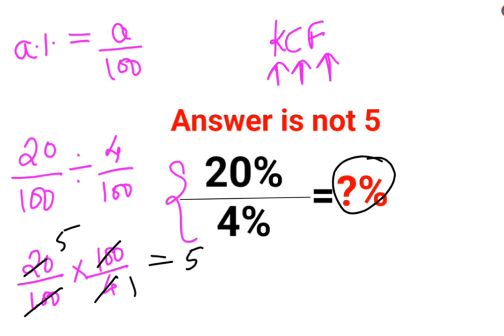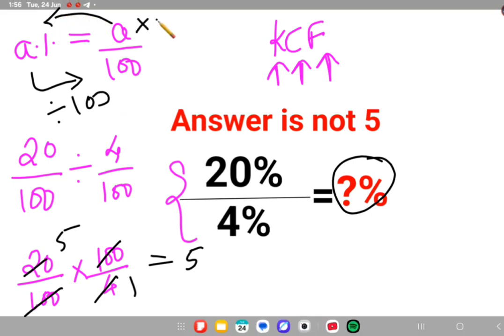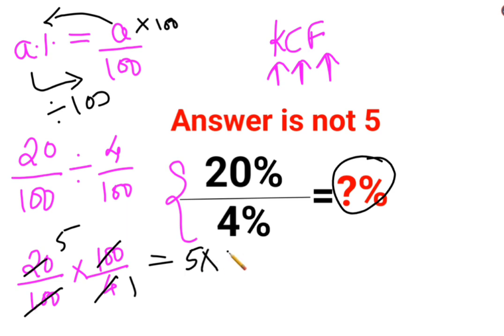Now if you look closely, if you had a percent and you wanted to convert it into a number, you divide it by 100. Now if you have a number and you want to convert it into a percent, you need to multiply by 100. So this also gets multiplied by 100. So the answer for this question is supposed to be 500%.